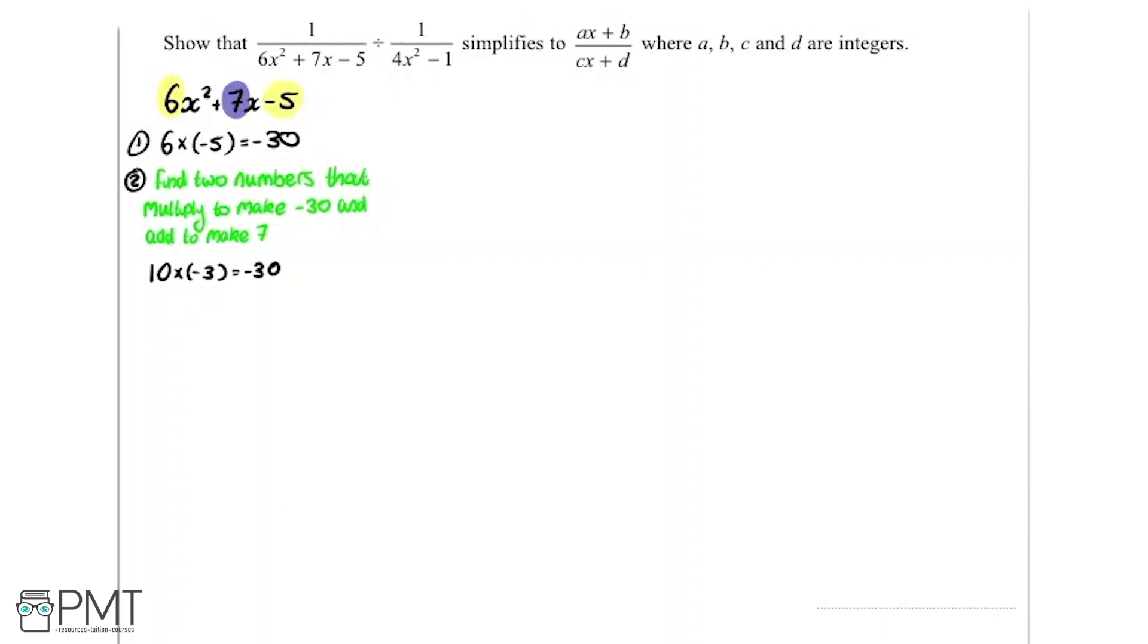And if we do 10 plus minus 3, so essentially just 10 minus 3, we get 7 which is perfect. So those work. So our numbers are 10 and minus 3 in this case.